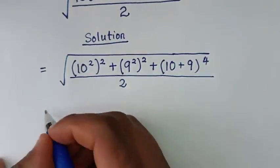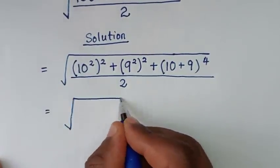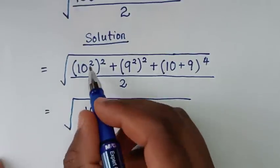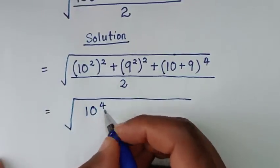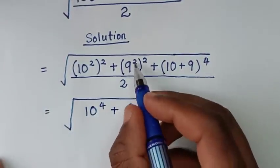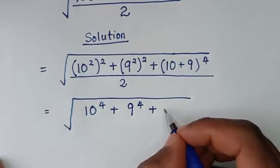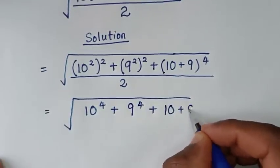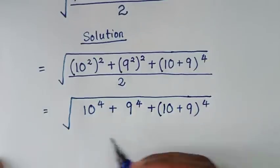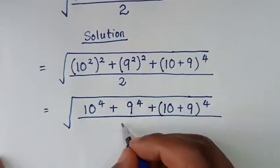In the next step it will be equal to the square root of 10 — power of 2 times power of 2 gives power of 4 — plus 9 — power of 2 times power of 2 gives power of 4 — then plus (10 + 9) to the power of 4, over 2.